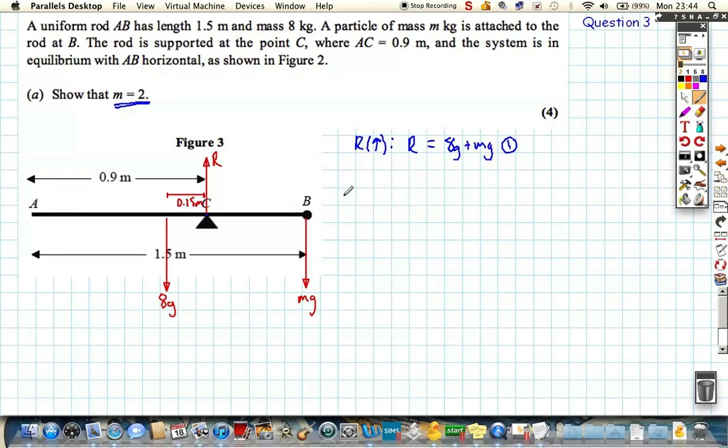So let's take moments, let's take moments resolving around C, and as it's in equilibrium, we know the total moment in the clockwise direction is going to be equal to the total moment in the anticlockwise direction. So in the clockwise direction, we've got this distance here, which is 0.6 metres, so we've got 0.6 multiplied by that force, which is mg.